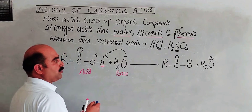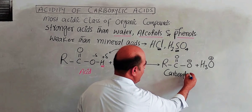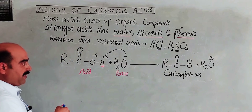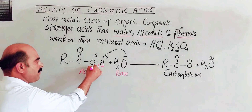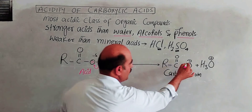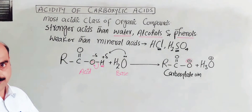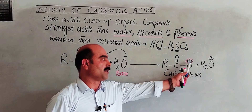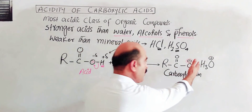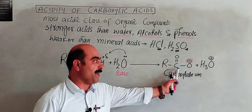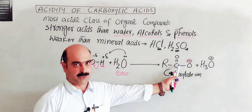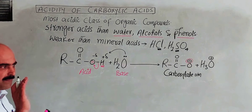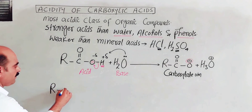The carboxylic acid donates a proton to water, which acts as the base accepting the proton. The product formed is called the carboxylate ion. In the carboxylate ion, the electrons are delocalized and the proton is easily released.